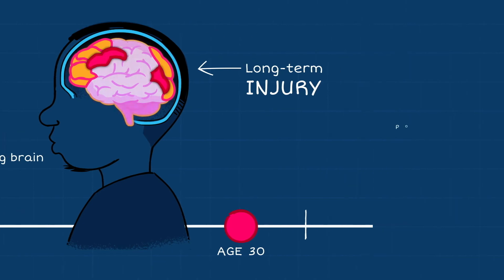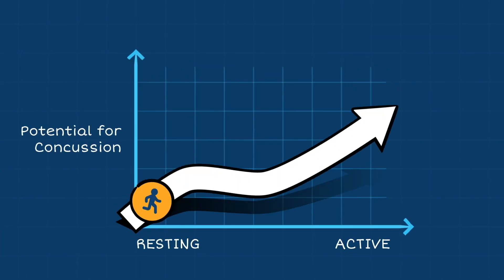An arrow pointing to this area of the brain reads, Long-term injury. The potential for a concussion is increased when children are active. A graph appears on screen. The x-axis reads, Resting and Active. The y-axis reads, Potential for Concussion. A white arrow curves upward to the right along the graph. An icon of a running child glides along this arrow.